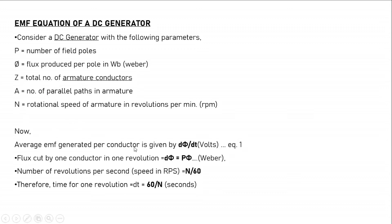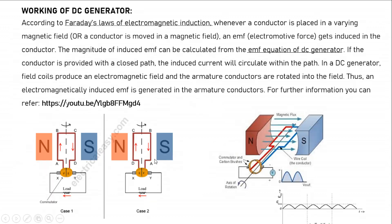The average EMF generated per conductor is given by dφ/dt — Faraday's law of electromagnetic induction, the rate of change of flux with respect to time. The flux cut by one conductor in one revolution: when the conductor is rotating, it has to pass through as many poles as are present. So the total flux cut by one conductor in one revolution is P × φ.